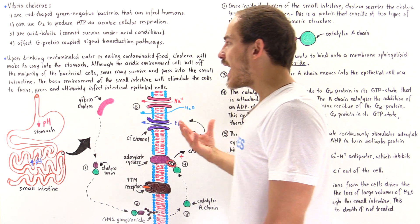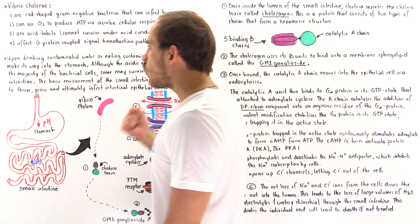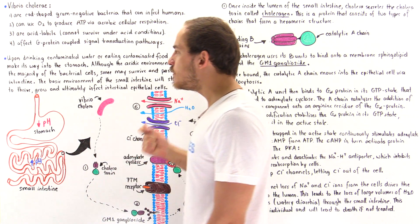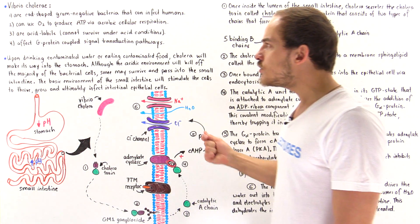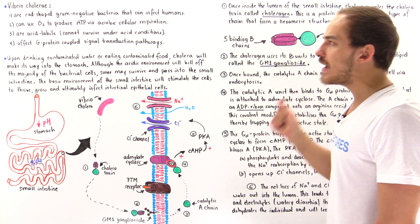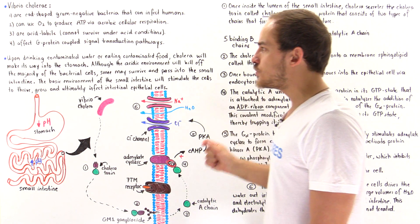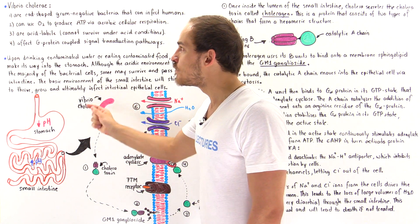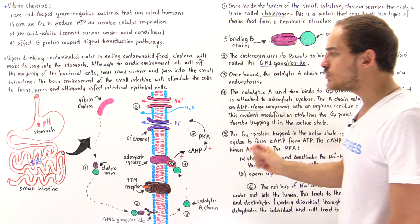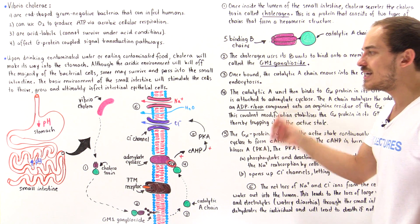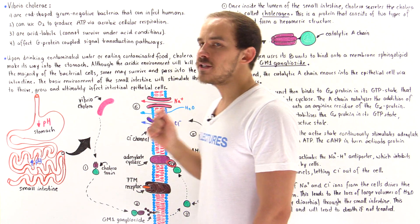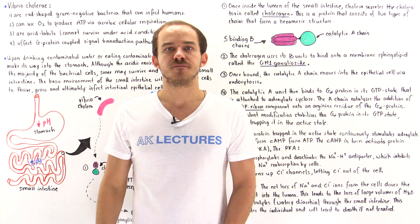We see that it's very important that our cells be able to function these signal transduction pathways effectively and efficiently, because if they malfunction, they can lead to very serious and dangerous medical conditions.